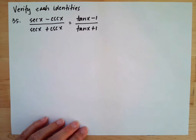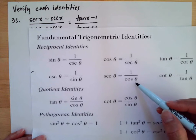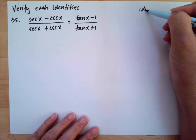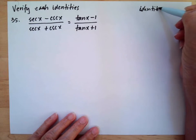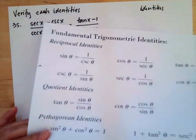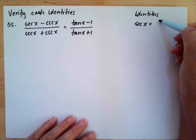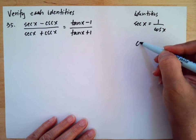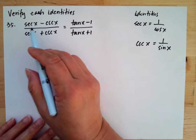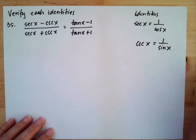The first thing we will do is use the identities: sec theta equals 1 over cosine theta, and csc theta equals 1 over sine theta. Since theta represents any angle, we can use x instead. So sec x equals 1 over cosine x and csc x equals 1 over sine x.